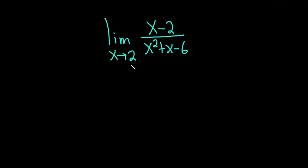Whenever you have a limit problem like this, the first thing you should do is plug in the number and see what happens. So if we do that, in the numerator we get 2 minus 2, which is 0.